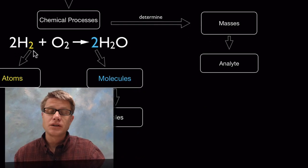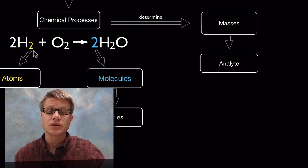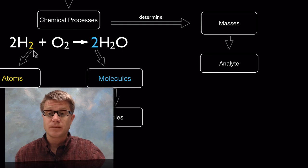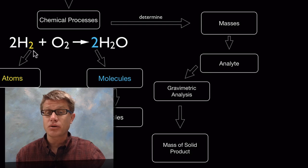Now that we know conservation of atoms, we can use the masses in chemical reactions to figure out what's called the analyte — that's going to be an unknown in a reaction. We can do that in two ways. The first way is through gravimetric analysis, which is just using the mass of a product, something that we get out of the reaction.